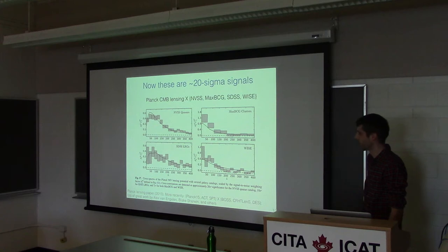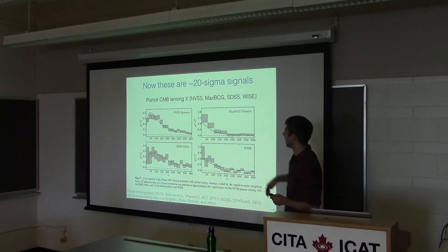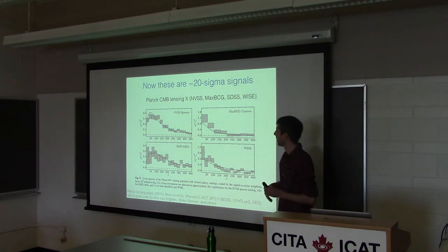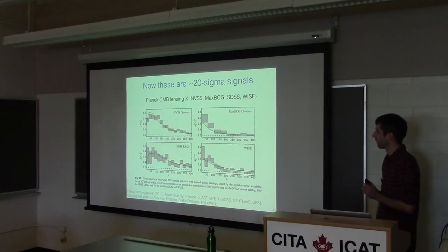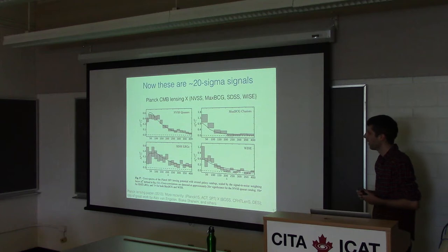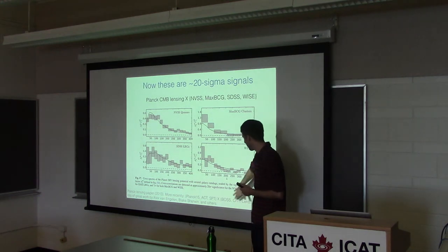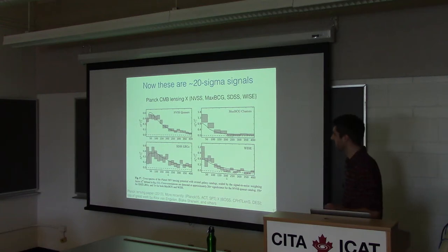Today we have much better data so these signals have become much better. Planck CMB lensing reconstruction cross-correlated with different galaxies gives something like 20 sigma on some cross-correlations. There are many more analyses — for example, cross-correlations of CIB with ACT CMB lensing. You can also take SPT and correlate not just with galaxy clustering but also with galaxy lensing. There are increasingly many cross-correlations that people are measuring.